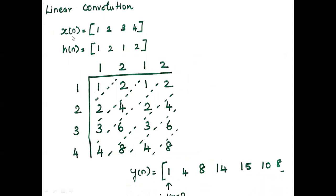Consider two sequences: x(n) as 1, 2, 3, 4 and h(n) as 1, 2, 1, 2. First we have to calculate the length of x(n) and h(n). In this example, the length of x(n) is 4 and h(n) is 4.